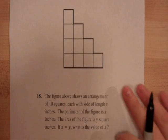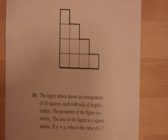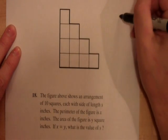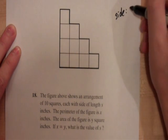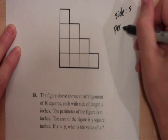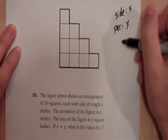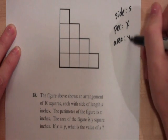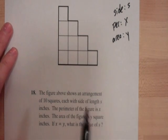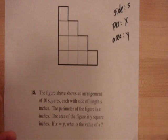So, here we have a number 18, and as you can see, there are no answer choices. So, this is 18 out of 18. This is about as hard as the questions get on the SAT, and I'll read this one for you. It says the figure above shows an arrangement of 10 squares, each with a side of length s inches. The perimeter of the figure is x inches, and the area of the figure is y square inches. If x equals y, what is the value of s? So, again, we have three unknowns here. We have our side, which is s. We have our perimeter, which is x, and we have our area, which is y. So, again, three things that we don't know, and as you can see in the question, only one equation that they're giving you, that x equals y.